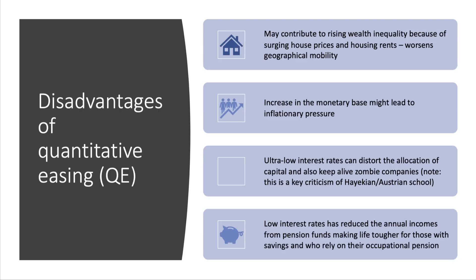A third disadvantage refers to the Hayekian or Austrian school of economics. If QE keeps interest rates particularly low — lower than they would otherwise have been — Hayekians argue this distorts the market for capital, distorts incentives, and can keep alive unproductive zombie companies who can roll over their debt and keep paying low interest rates. A fourth disadvantage of QE is that with interest rates lower, the annual incomes from pension funds go down, so the annuities that pension funds can offer to people who've saved are much lower — making life tougher for people who rely on their savings in retirement and those who rely on their occupational pension.